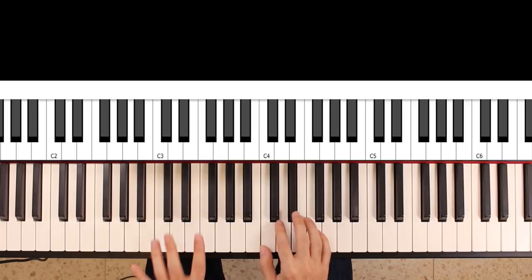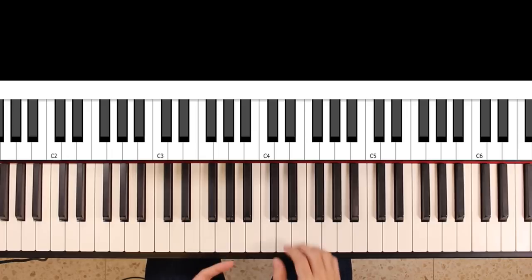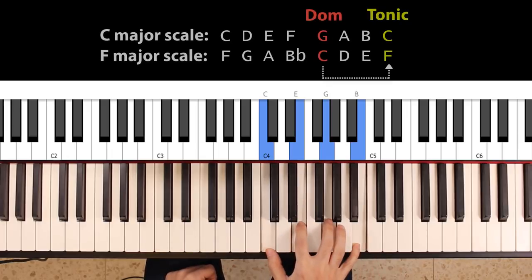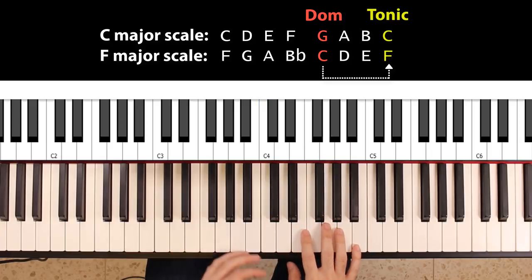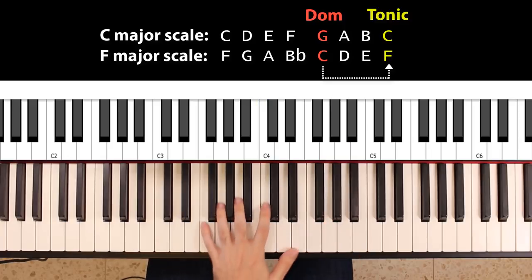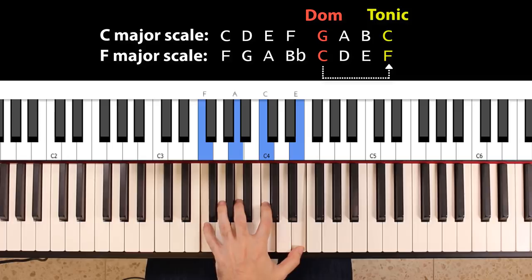Now, we come to the idea of this lesson, that is the secondary dominance. And the idea is the following. Suppose you're playing in the key of C major, and one of the chords you're landing on is the subdominant. So that would be an F major seventh chord. Now, just for a moment, you can think of it as if you're in the key of F major, and you're playing the tonic.